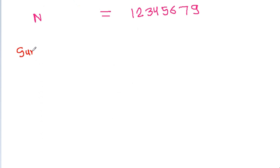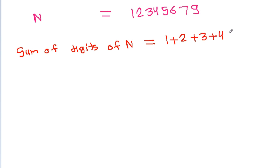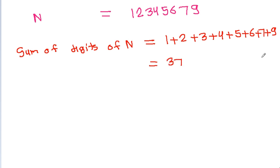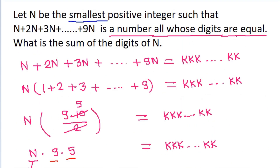The sum of digits of n equals 1 plus 2 plus 3 plus 4 plus 5 plus 6 plus 7 plus 9, which gives 1, 3, 6, 10, 15, 21, 28, 37. The answer is 37.